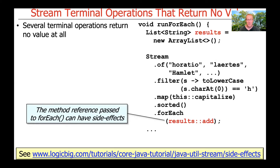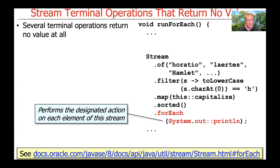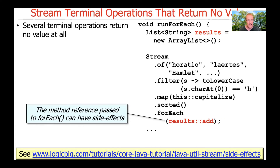Here's the interesting part. You can actually pass in any method reference or lambda expression that has a side effect. Here's another example: we define a local variable called results, which is a list implemented using ArrayList. We pass results::add as the method reference to forEach. When forEach runs, it calls the add method on the results variable and adds the elements one at a time in encounter order to the results list. That could have been a static global field; I just put it here to make the program more self-contained.